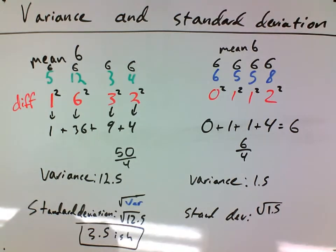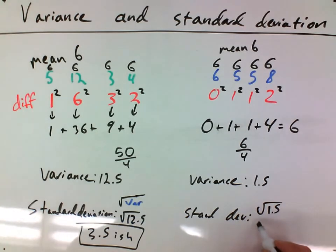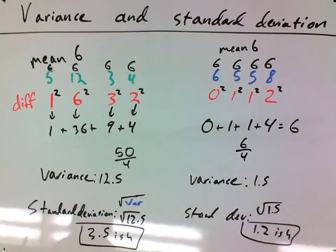So the square root of 1.5 is 1.2-ish. A lot of decimals after that, but I'll just truncate it right there.